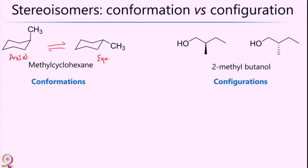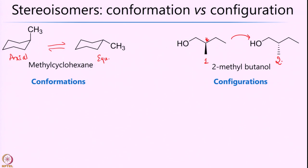This is what we call conformation: isomers that do not involve breaking of bonds and undergo rapid conversion between them. The next category is configuration. In this example with 2-methyl butanol, the particular carbon marked with an asterisk is a stereocenter or chiral center. To go from one enantiomer to another, one has to actually break the bond — you cannot interconvert between these two forms by just rearranging atoms. These are actually isolatable, and they differ mostly in the way they rotate plane-polarized light.